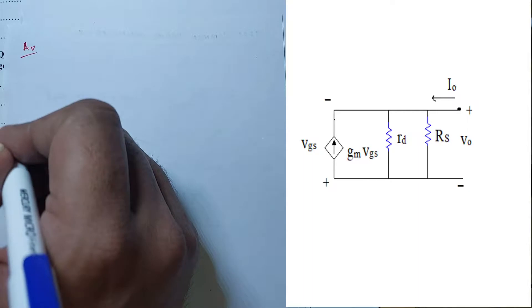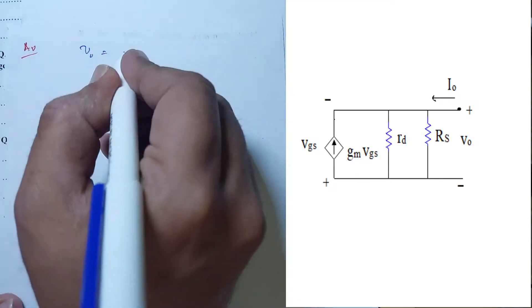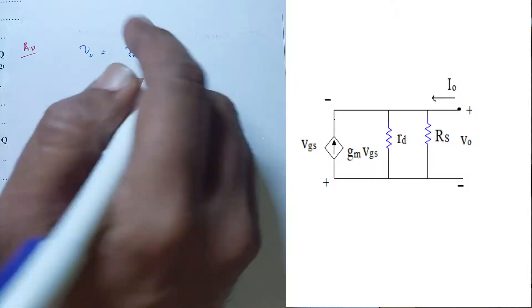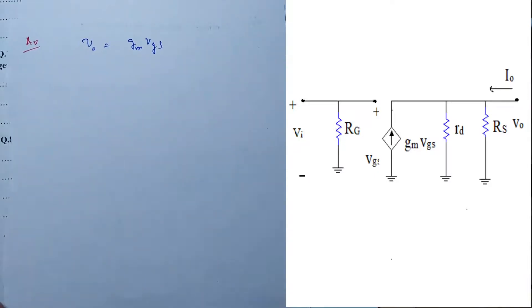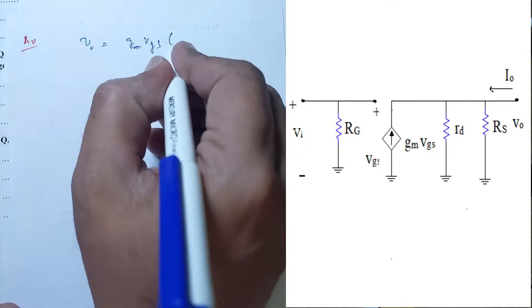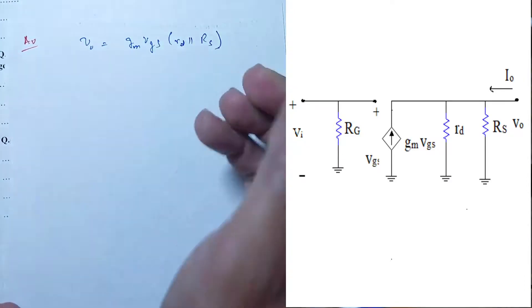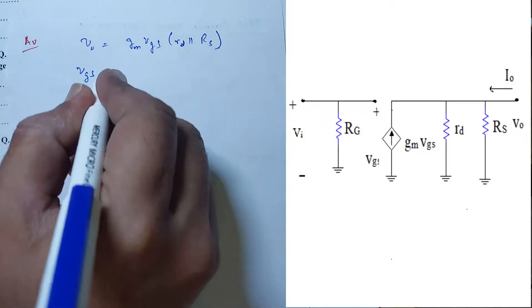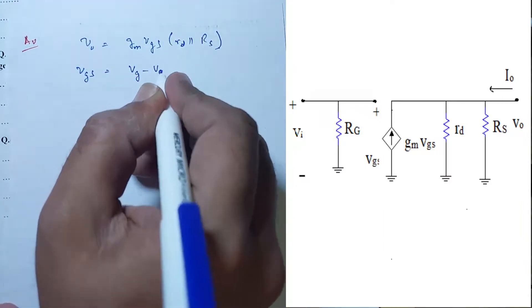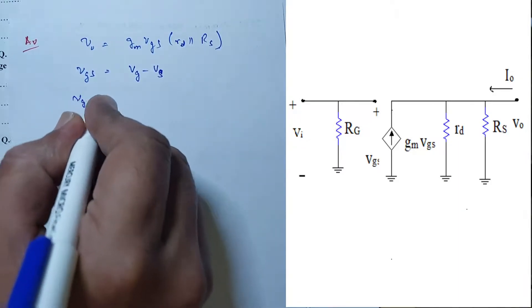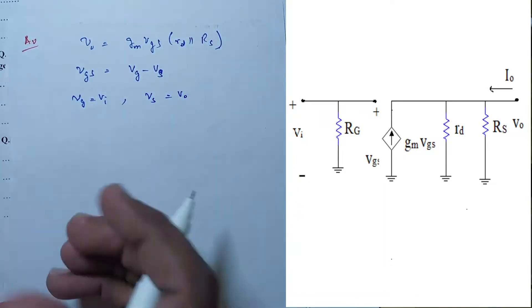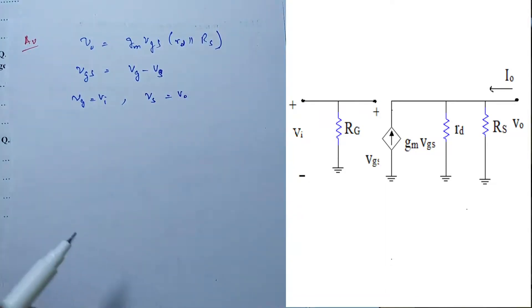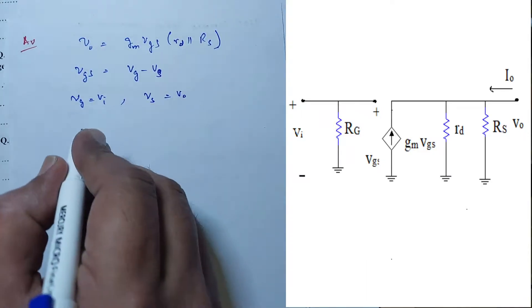Finally, the last important parameter is the voltage gain. Looking at the output side, we have gm times VGS in parallel with Rd in parallel with Rs. And VGS equals VG minus VS, where VG equals V_input and VS equals V_out, since the output is taken at the source terminal.